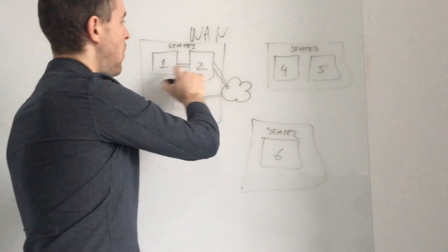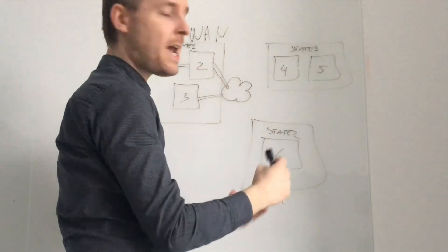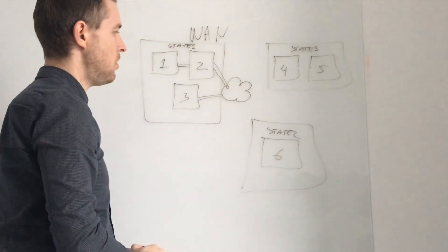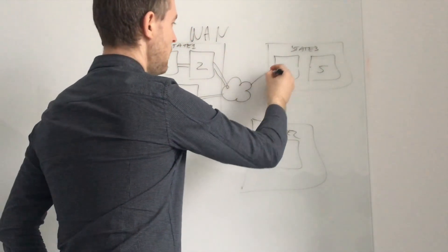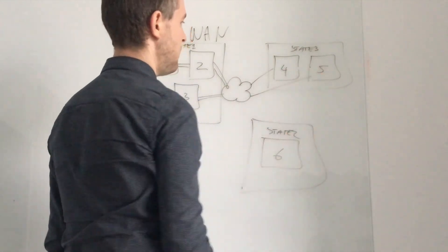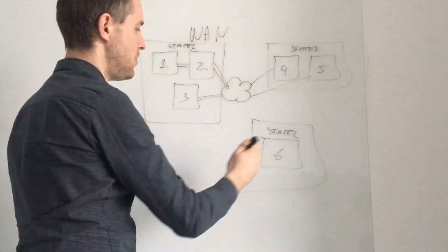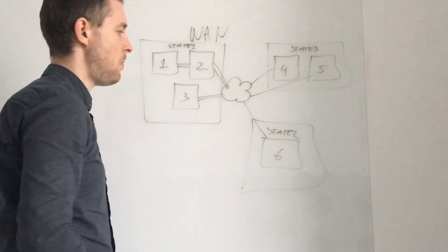So three to communicate with one and two, even though they're within the same state, would go out to your internet. And then you've got multiple connections, say something like that, if you don't have a link between these two. And then from a state, it goes that way as well.